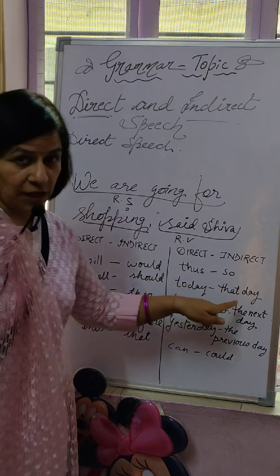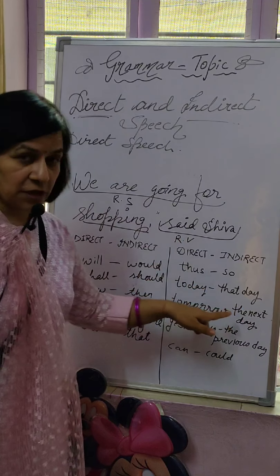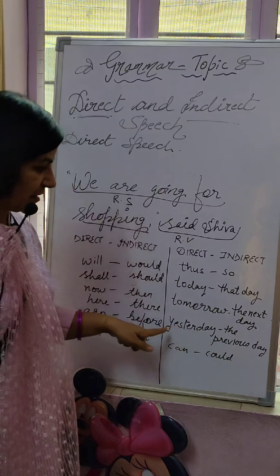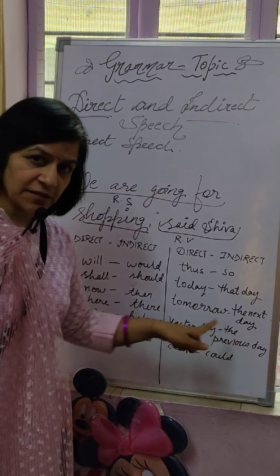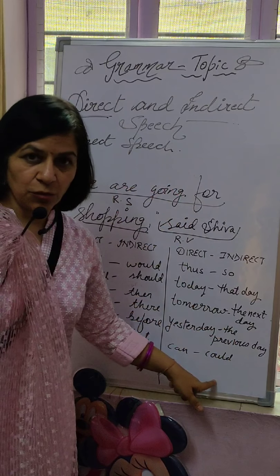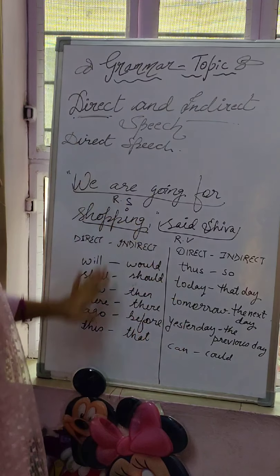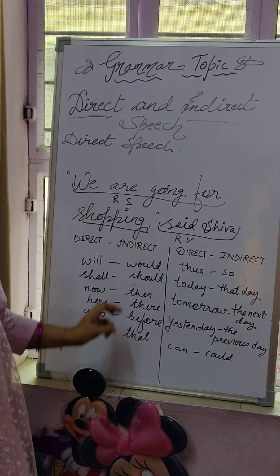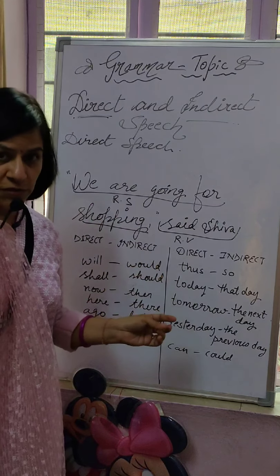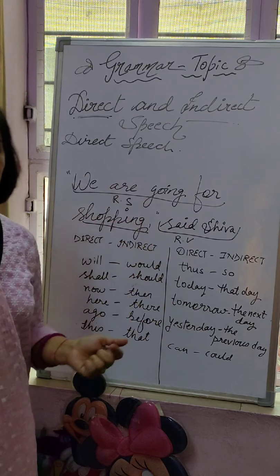'Today' changes into 'that day.' If it is 'tonight,' then 'that night.' 'Tomorrow' becomes 'the next day.' 'Yesterday' means 'the previous day' — it has already gone. 'Can' changes into 'could.' 'Either too' will change into 'there too.' These are the changes we make when we write direct to indirect speech, along with some other rules that we will discuss in the second slide.